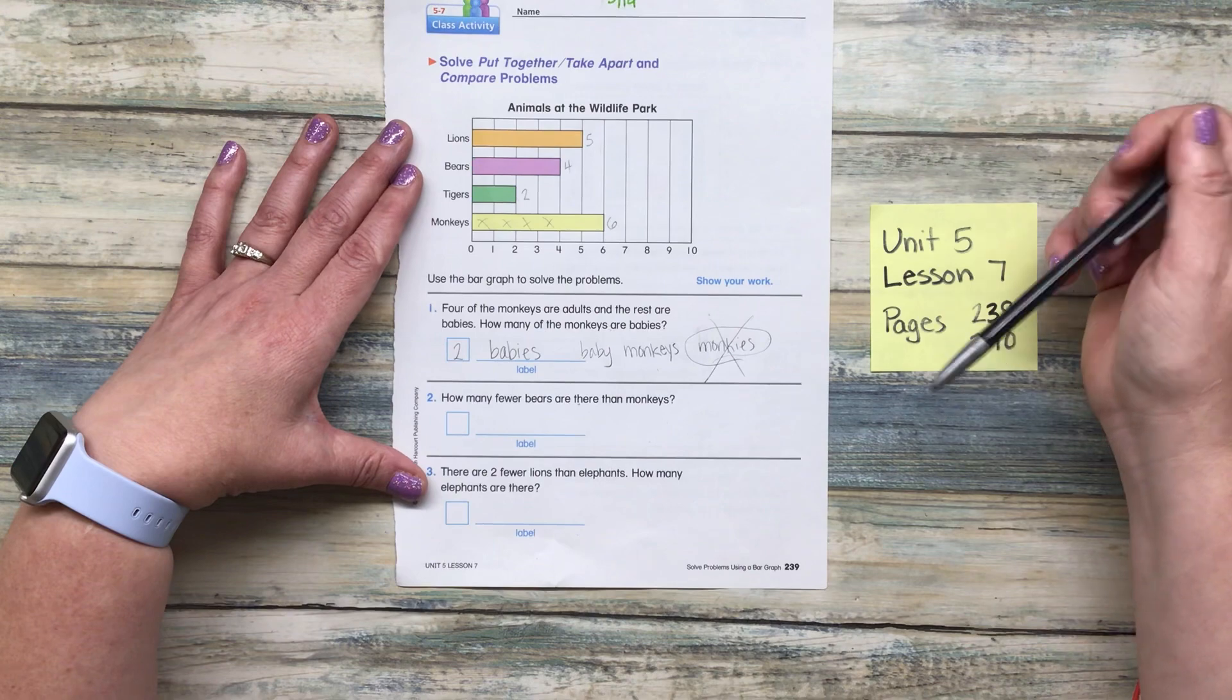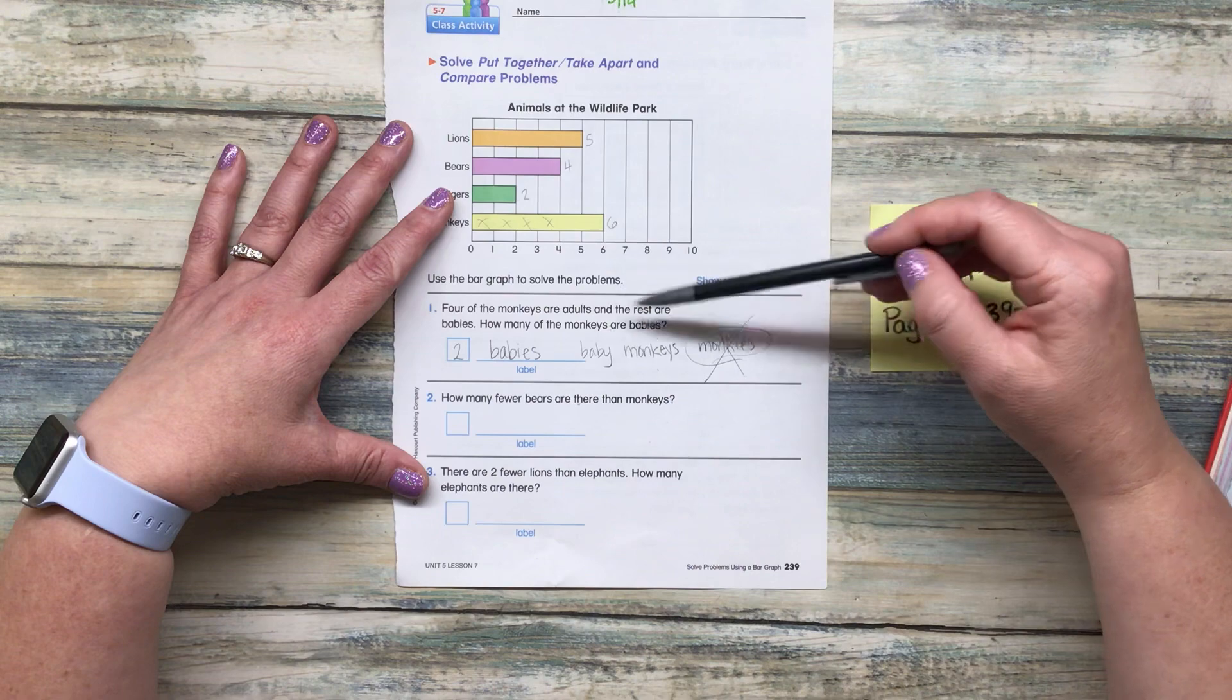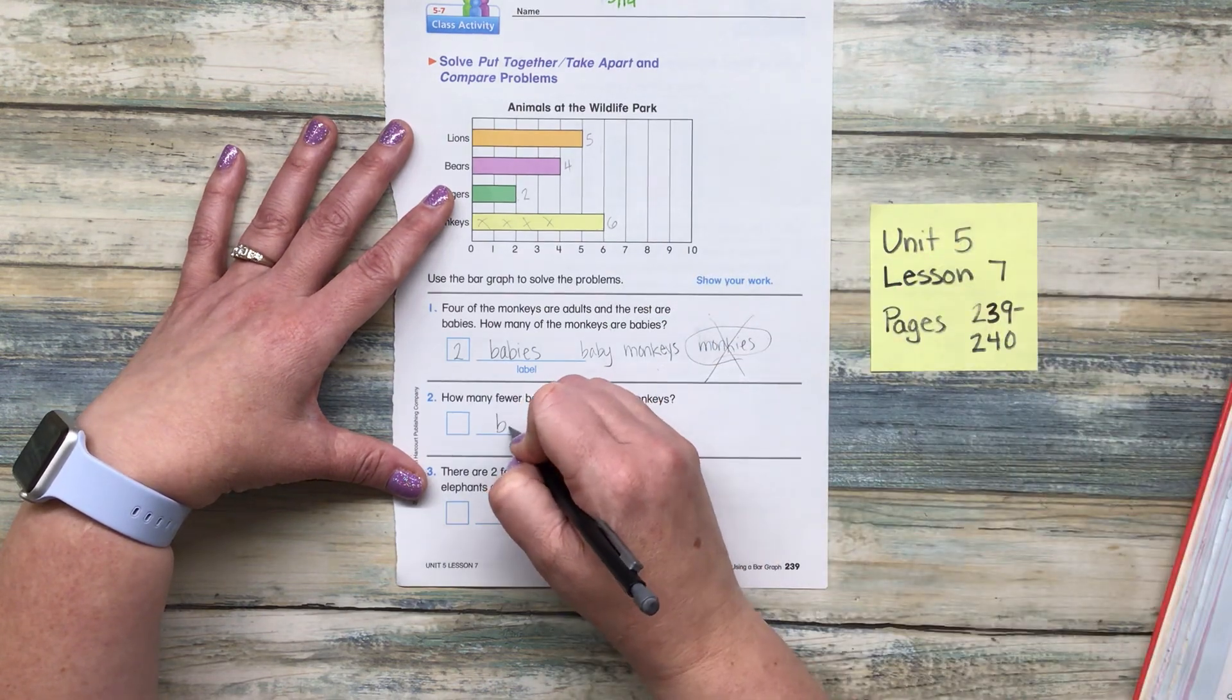All right. How many fewer bears are there than monkeys? Go ahead and do this one on your own. The label on this one is going to be bears.